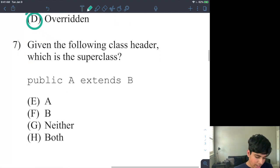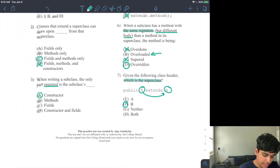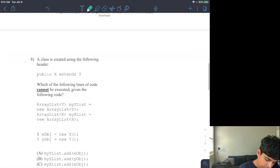Now going to number seven, this one's pretty simple. Which of the following class, or given the following class header, which is the superclass? So remember I'm saying that A extends B. So really what I'm saying is that A is a subclass of B or B is a superclass of A. So in this case, B would be the superclass.